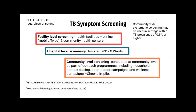In terms of who we screen, essentially we screen all patients regardless of setting. Screening can occur at a facility level — at clinics and community health centres — at a hospital level including OPDs and wards, and at community level as part of outreach programs including household contact tracing, door-to-door campaigns, and wellness campaigns such as Cheka and Pilo. Cheka and Pilo is a wellness campaign focused on testing and treating for HIV, TB, STIs and non-communicable diseases. The WHO recommends community-wide systematic screening in settings with TB prevalence of 0.5% or higher. Based on the national TB prevalence survey, we currently fall at 0.825%, so it is definitely warranted in our setting.